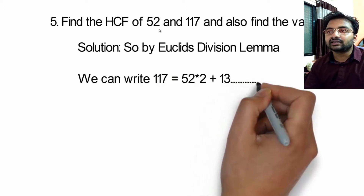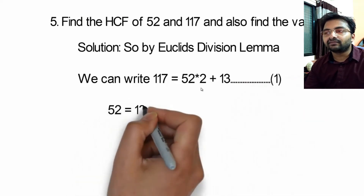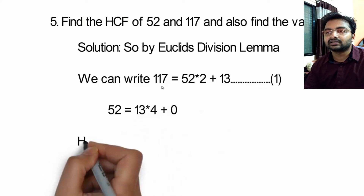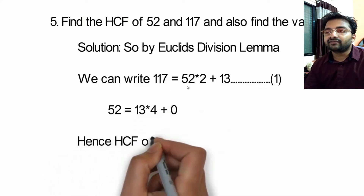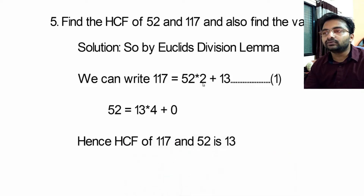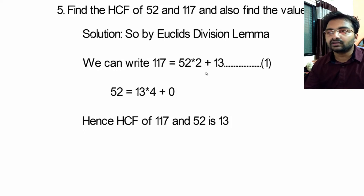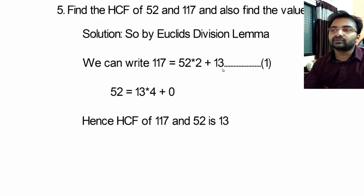So using Euclid's Division Lemma: 117 = 52 × 2 + 13. Here 117 is the dividend and 52 is the divisor. So 52 × 2 = 104, and 117 − 104 = 13, so the remainder is 13. This is our first equation.